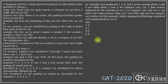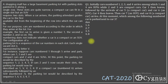This was the easiest case set among all the five case sets here. It's given that a shopping mall has a large basement parking lot with parking slots. Some of them are SUVs, some of them are compact cars. An SUV will occupy two places, while a compact car will occupy only one place. So they'll come in a sequence.